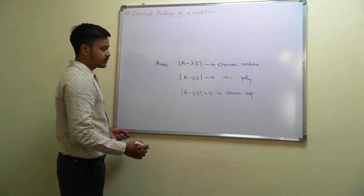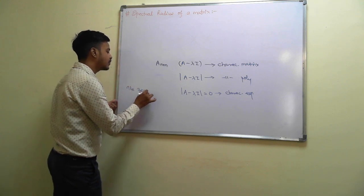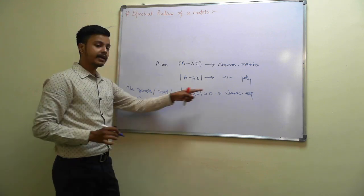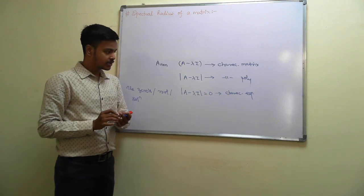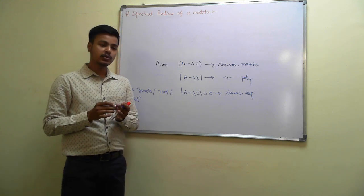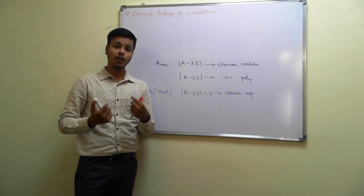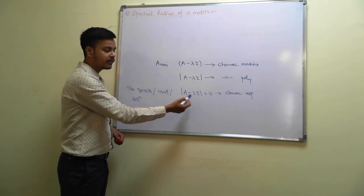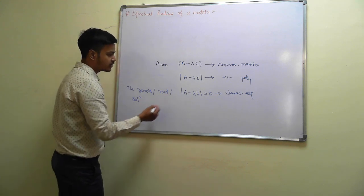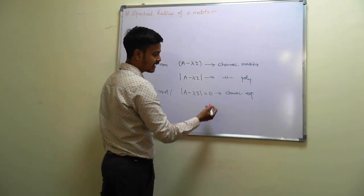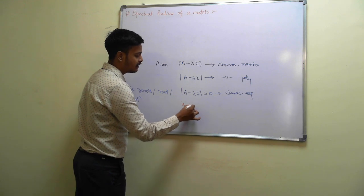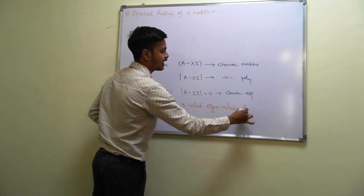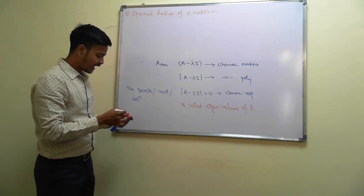The zeros, or the roots, or solutions of this characteristic equation are known as eigenvalues. Other names for eigenvalues are characteristic roots, latent roots, or proper values. So the root or solution of A minus lambda I equal to zero, that is the characteristic equation, is called the eigenvalues of A.